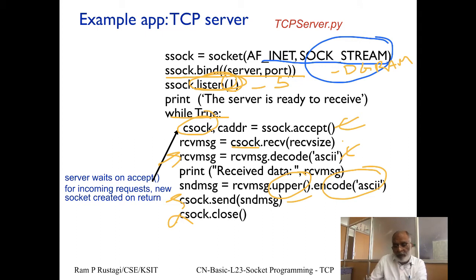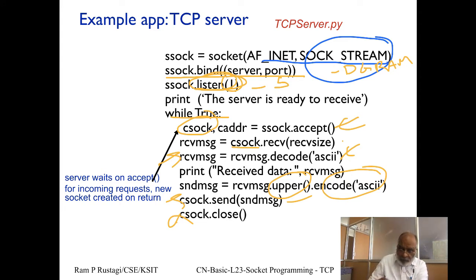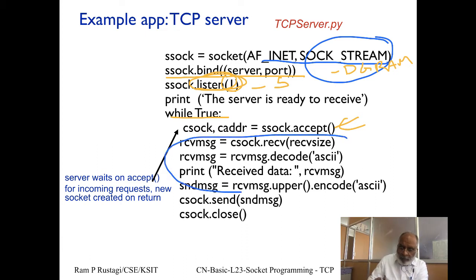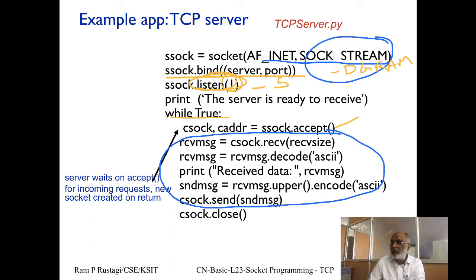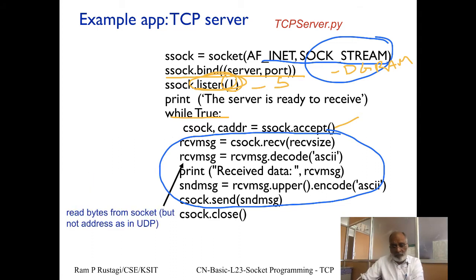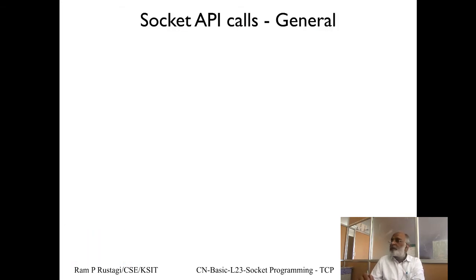If you want the server to handle multiple messages from a single client, the send and receive should be inside an inner while loop — as long as the client keeps sending, the server processes it. Only when the client closes the connection will the received message length be zero, at which point the server closes that connection and goes back to waiting for the next client.